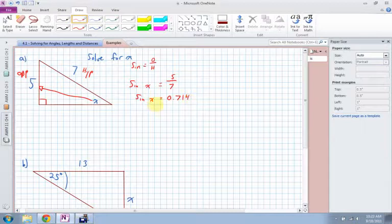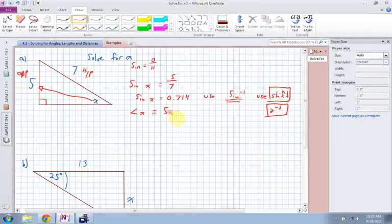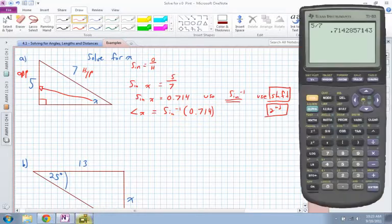So 0.714 is equal to sine x. What I need to do is I need to solve for my angle. In order to solve for angle x, what I have to do is I have to use the inverse of sine. So I need to use sine to the negative 1. So that means we're going to have to use, on some calculators they have a shift button, on other calculators they have like a second function button. So I would say that's equal to sine to the negative 1 of 0.714. You don't necessarily need to write out this step.